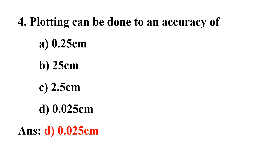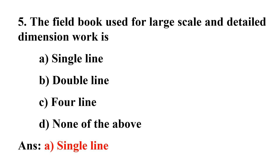The fifth question: The field book used for large scale and detailed dimensional work. Option A: single line, Option B: double line, Option C: four line, Option D: none of the above. We use a single line field book for large scale operations and a double line field book for ordinary work.